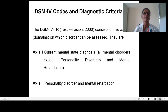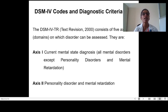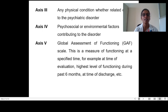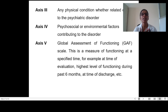DSM-4 TR (Text Revision of 2000) consists of 5 axes, sometimes called domains, on which disorders can be assessed. Axis 1 is current mental status diagnosis — all mental disorders except personality disorders and mental retardation. Axis 2 is personality disorder and mental retardation. Axis 3 is any physical conditions whether related or not to the psychotic disorders. Axis 4 is psychosocial or environmental factors contributing to the disorders. Axis 5 is the Global Assessment of Functioning, measuring functioning at a specified time such as at evaluation, highest level of functioning during the past 6 months, or at the time of discharge.